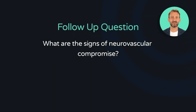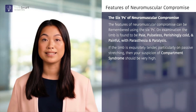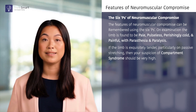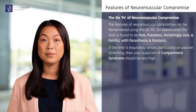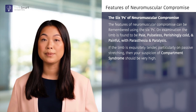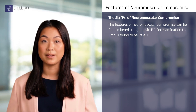What are the signs of neurovascular compromise? The features of neurovascular compromise can be remembered by the 6 Ps. On examination, the limb would be pale, pulseless, perishingly cold, and painful, with paresthesia and paralysis. A patient with severe pain which is out of proportion with their presentation, specifically on passive stretching, should raise your suspicion of compartment syndrome.